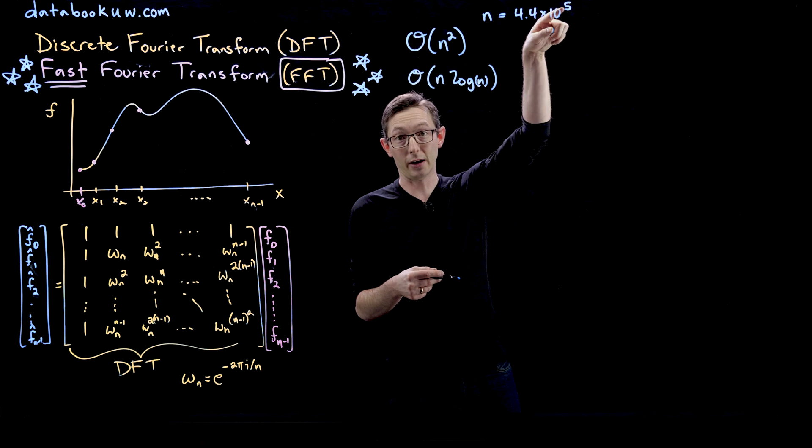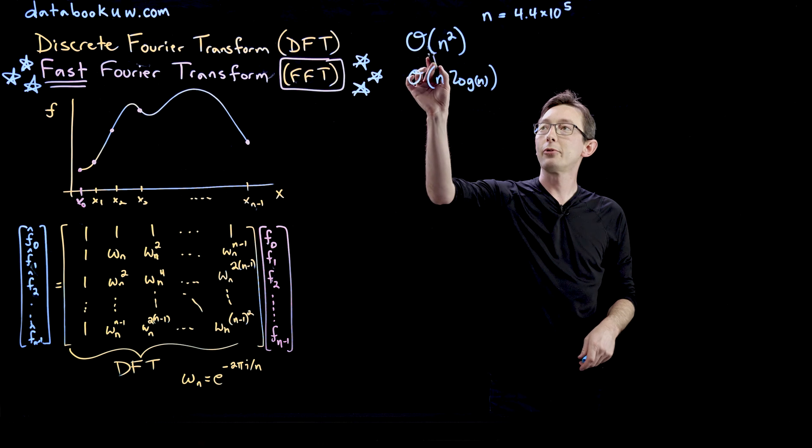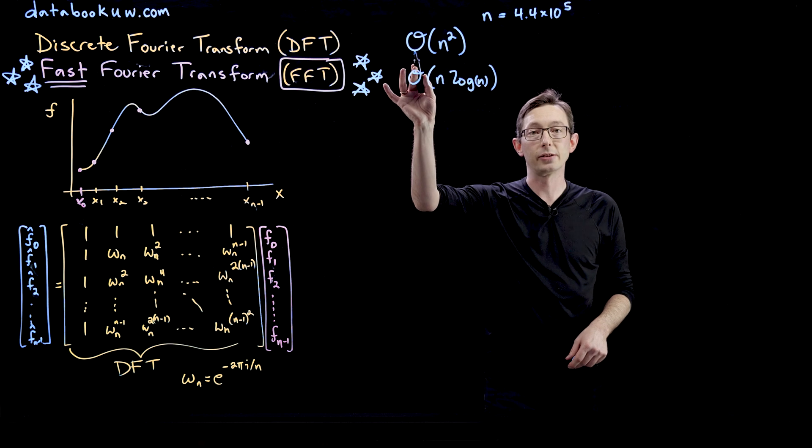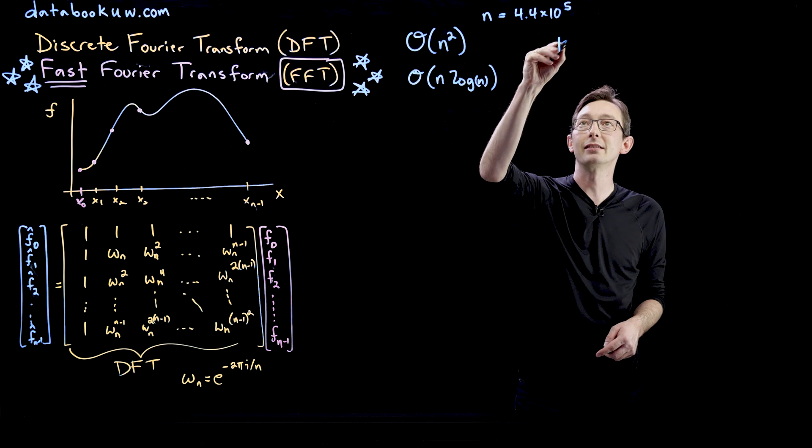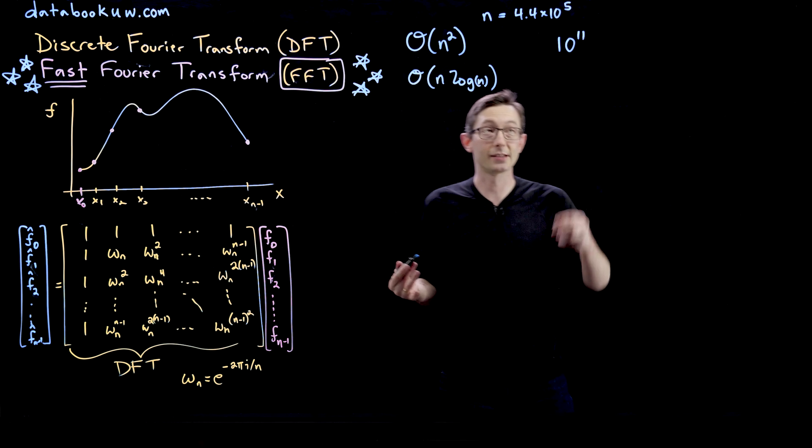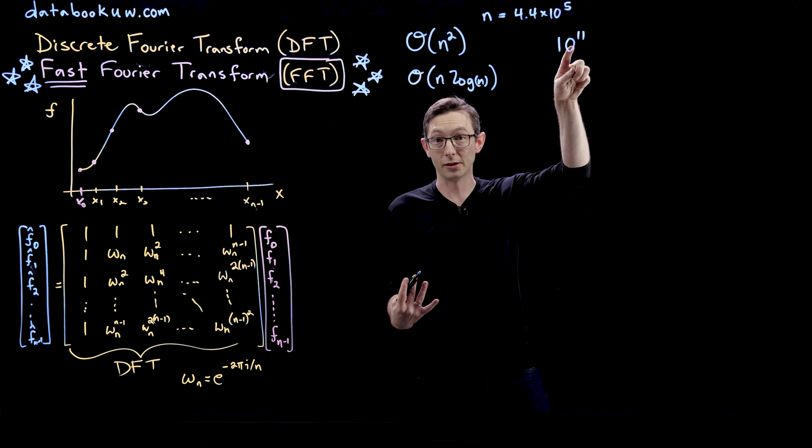To compress that using the discrete Fourier transform would amount to approximately 10 to the 11 multiplications. That's 100 billion multiplications.